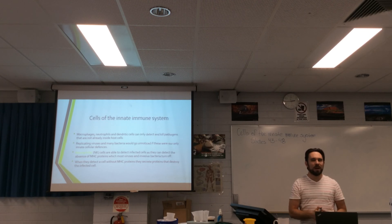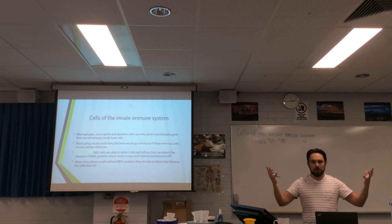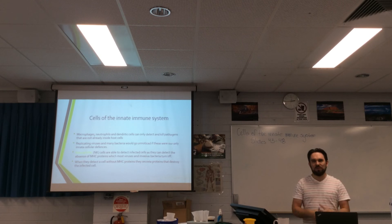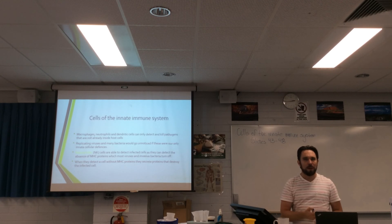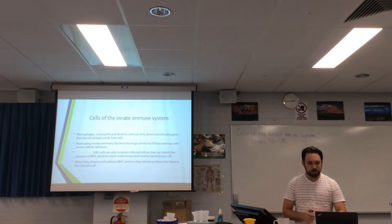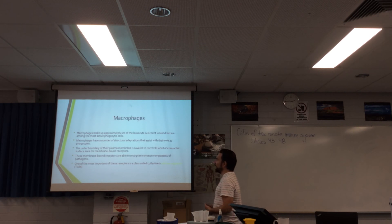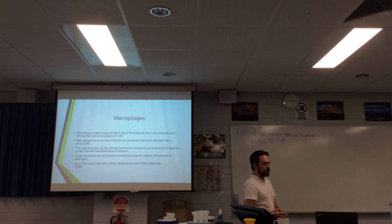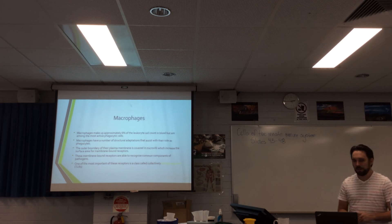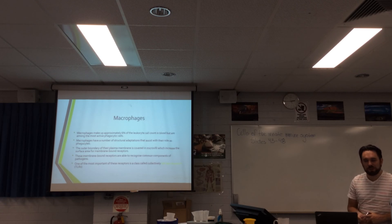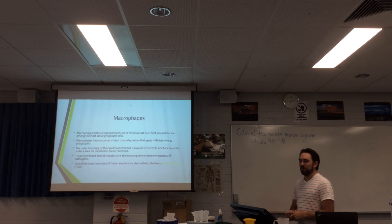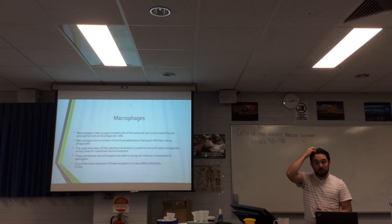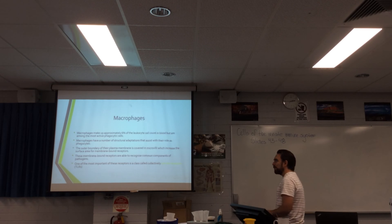NK cells still can't get at the viruses or bacteria directly, so they destroy the infected host cell — it's effectively useless and just full of material that will cause disease. Hopefully then the macrophages, neutrophils, and dendritic cells can mop up the rest. Macrophages make up approximately 6% of the leukocyte cell count in blood, but are among the most active. They are the primary mobile phagocytes.